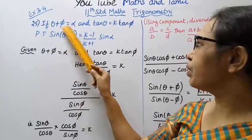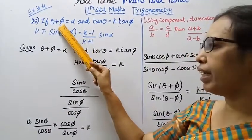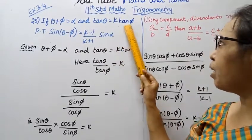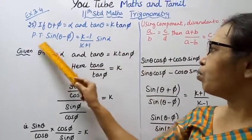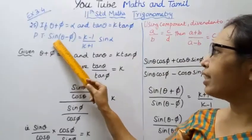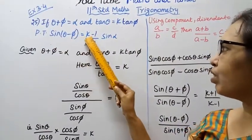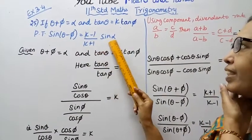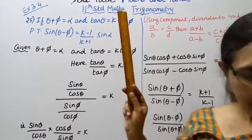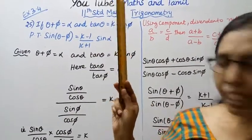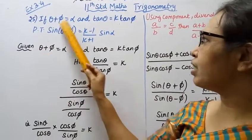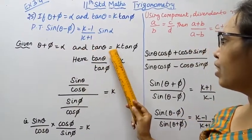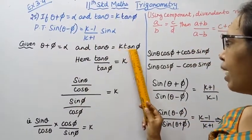Given theta plus pi equal to alpha, and tan theta equal to k tan pi. Prove that sin(theta minus pi) equal to (k minus 1) by (k plus 1) times sin alpha. Now, the given conditions are: theta plus pi equal to alpha, and tan theta equal to k tan pi.